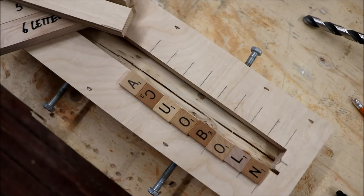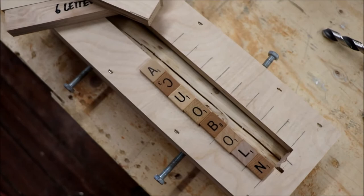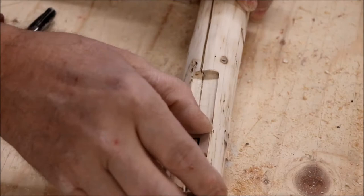We've got our jig set up for our first attempt. We're going to do a four letter word. Now the problem with Scrabble letters is that they're not all the same size, but the nice thing about Scrabble letters is that they're wood and if they're a little bit too big you can always sand them down a little bit. So we're going to make our groove a little bit smaller.